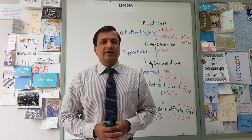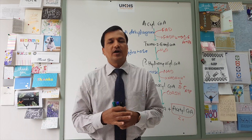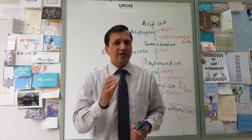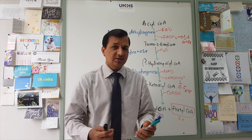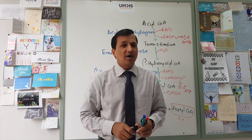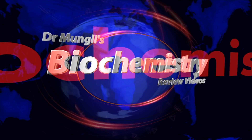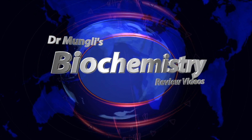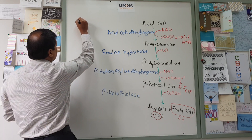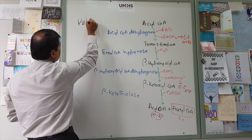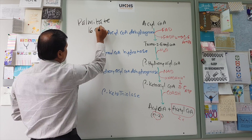Let us calculate how many ATPs we are going to get from oxidation of a specific fatty acid. Let us take the most common fatty acid in our body — palmitate, or palmitic acid. Palmitate is a 16-carbon fatty acid.